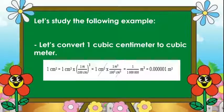If you are going to convert 1 cubic centimeter to cubic meter, you are going to do the reverse. 1 cubic centimeter is equal to 1 over 100 centimeters to the third power. When you multiply 100 three times, that becomes 1,000,000. 1 divided by 1,000,000 becomes 0.000001 cubic meters.